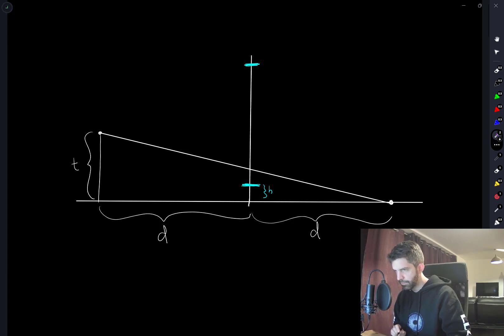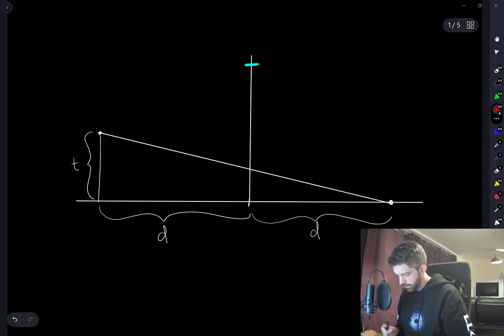But then doesn't, if you move closer, if you move closer, won't this point always be where the line of sight passes through the wall. So let me draw this here. So this is H.